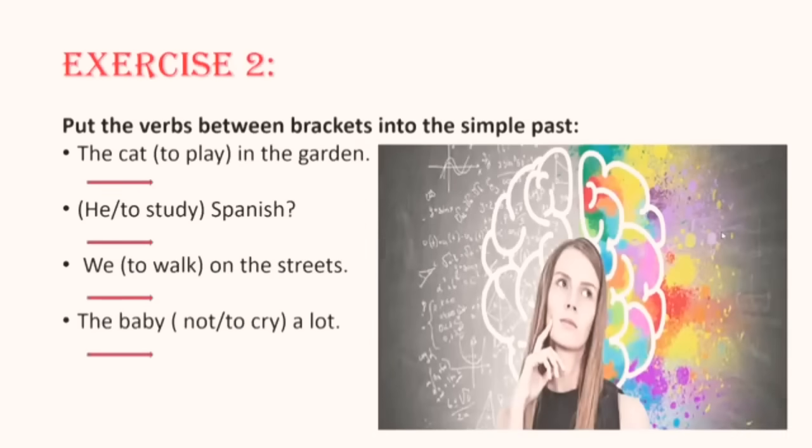So now let's move to the other exercise, exercise number two. You have verbs between brackets: to play, to study, to walk, not to cry. These verbs are between brackets and we want to put them into the simple past. What do you think about the first sentence? The cat to play in the garden. What's the simple past here of the verb play? Remember, you have a category here, verb ending in y. See what's behind the y, you have a. So what do you do? We've seen it before. Good job, played. We just add ed.